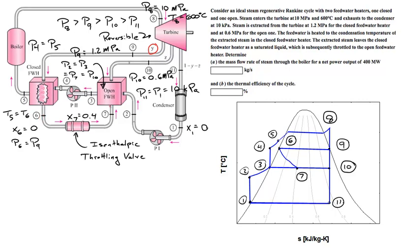From point 6 it flows into an open feedwater heater, and the open feedwater heater is at a pressure of 0.6 MPa — that's the pressure at which steam is being bled off at the intermediate point in the turbine. The open feedwater heater is just a big mixing vessel, so the pressure at stream 2 flowing in equals the pressure at stream 3 flowing out, and that equals the pressure at streams 7 and 10. So we're at 0.6 MPa at point 7.